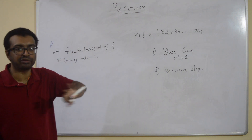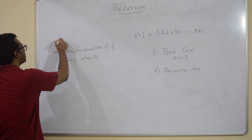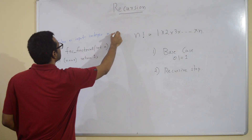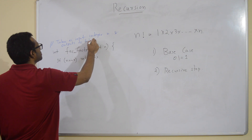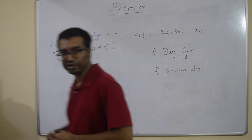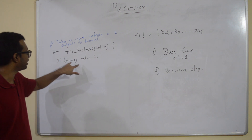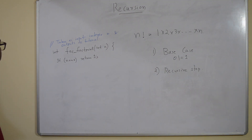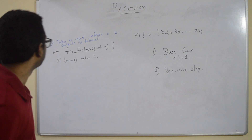Whenever you write a function, you should document what it does. This function takes as input an integer n and returns its factorial. So when the input is zero, we return one because zero factorial is one — and therefore this base case is correct.